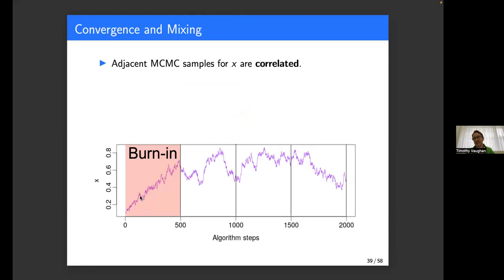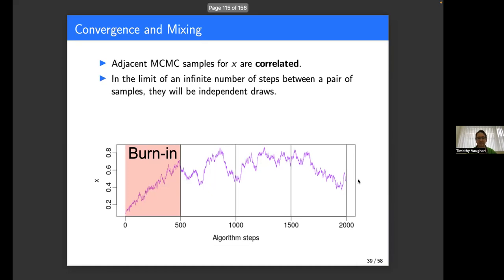There are some details to keep in mind. The fact that we start from an arbitrary point means that this first period of the chain — the burn-in period — is going to be biased and have nothing to do with the actual probability distribution we're trying to characterize, so we usually discard it before analyzing our samples. Also, because of the way MCMC works, adjacent MCMC samples are correlated, so far from having 2000 independent draws from f(x), we've got some much smaller number of effectively independent samples. But if we run this for long enough, we'll eventually get a good characterization.